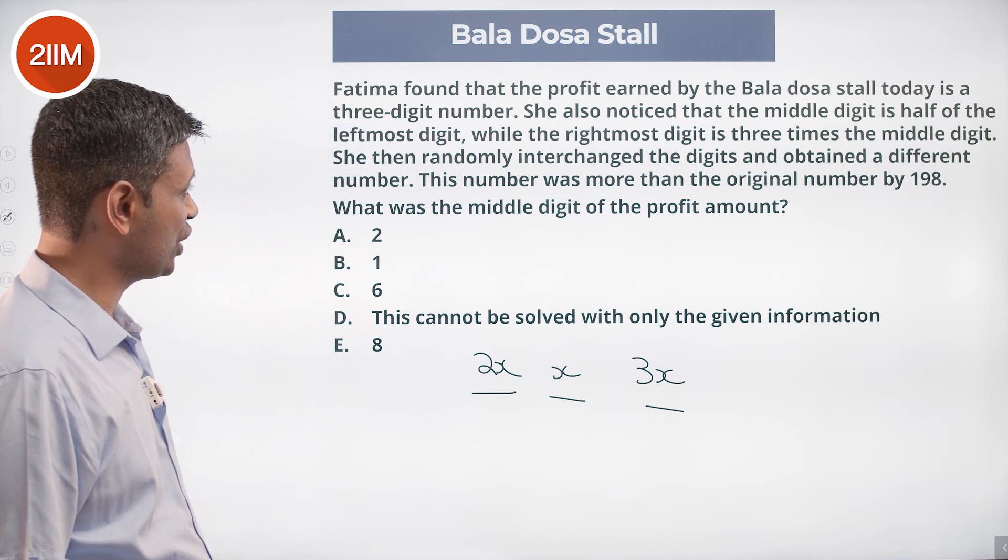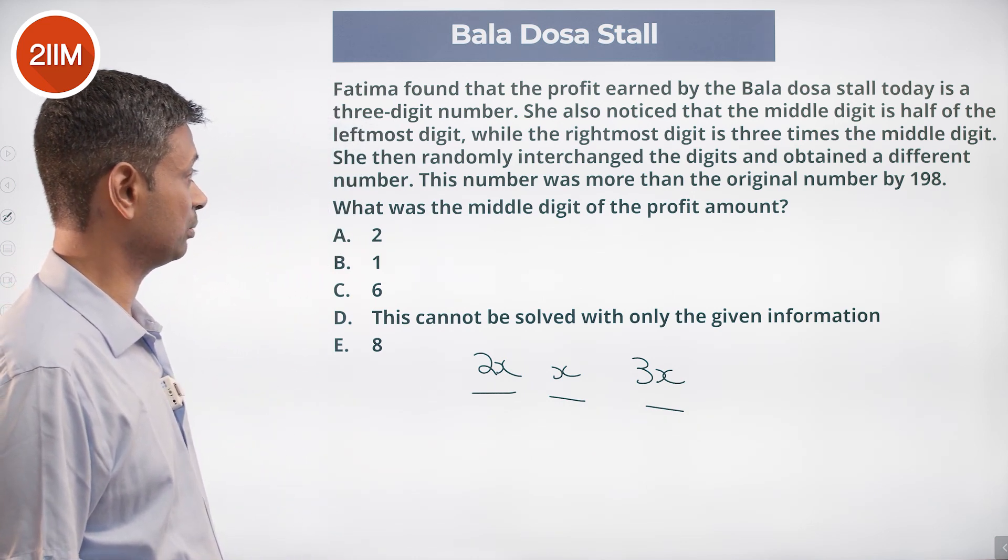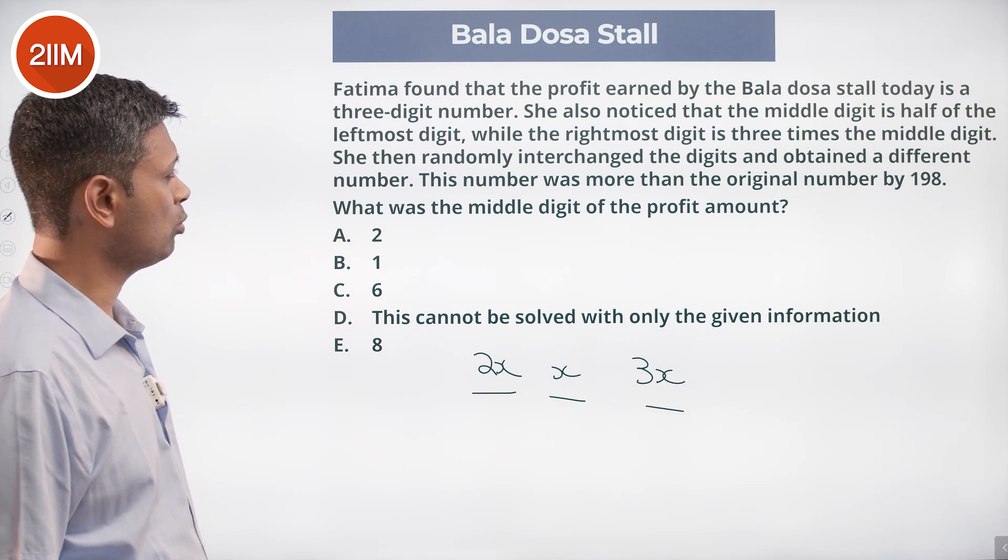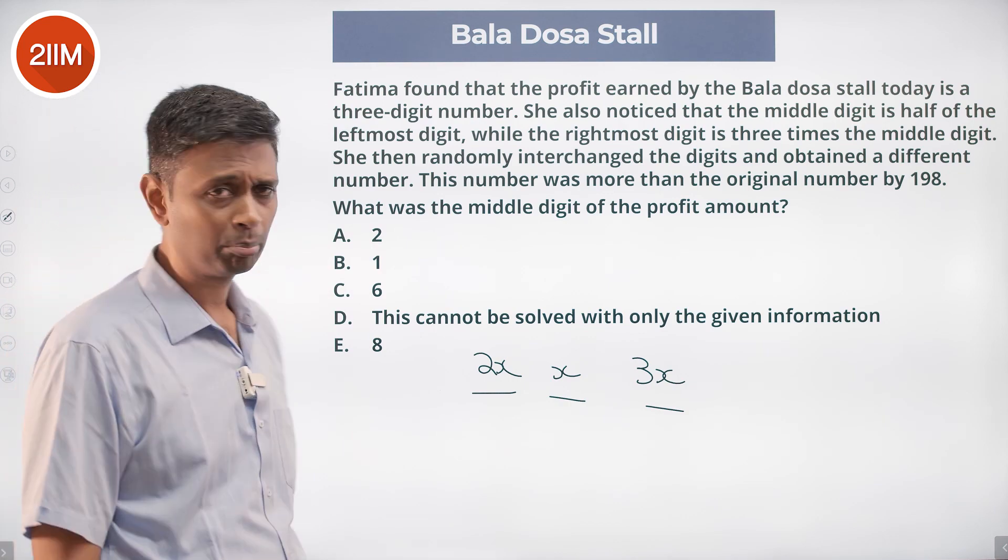She then randomly interchanged the digits and obtained a different number. This number was more than the original number by 198.